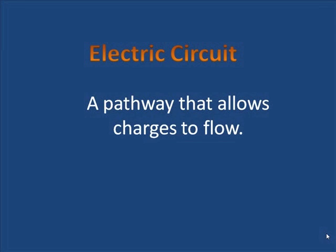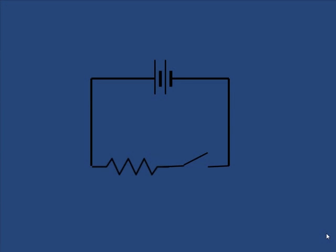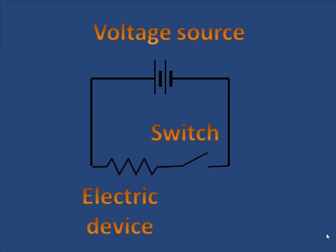The electric circuit is a pathway for charges to flow and there are three components. You need a power source or a voltage source, some kind of electric device, and a switch. Let's look at each in turn.